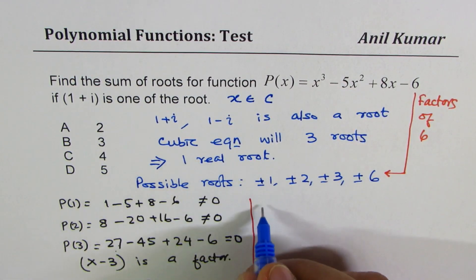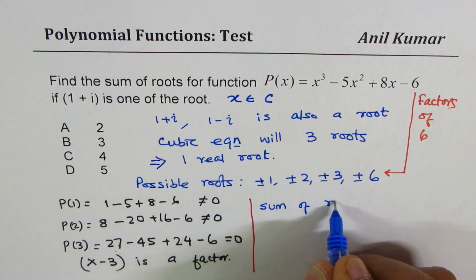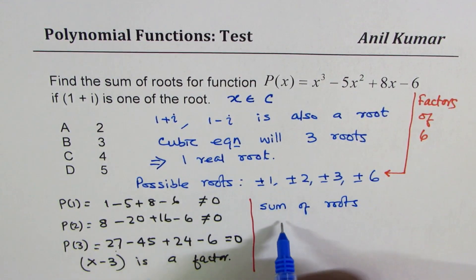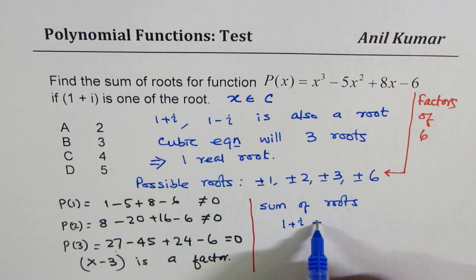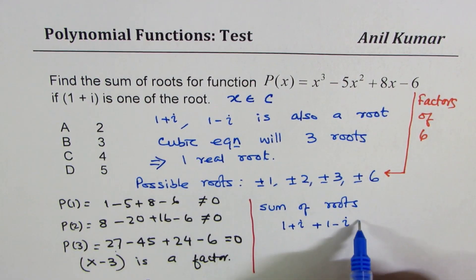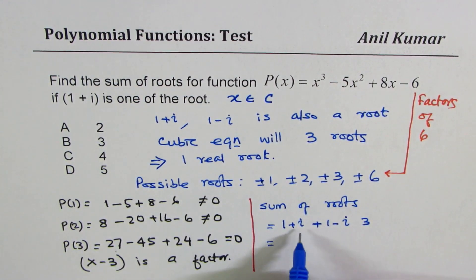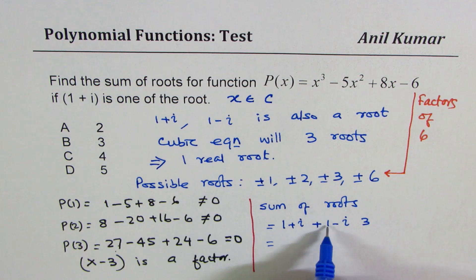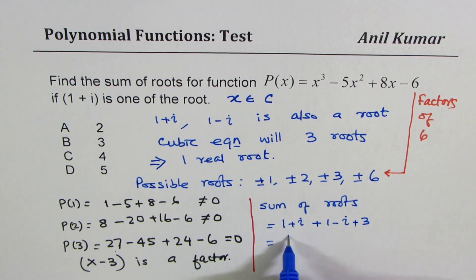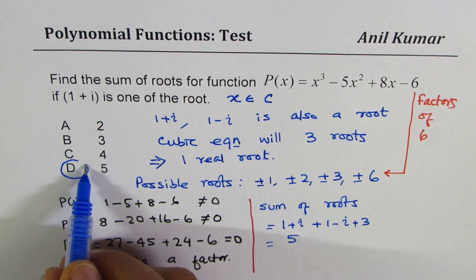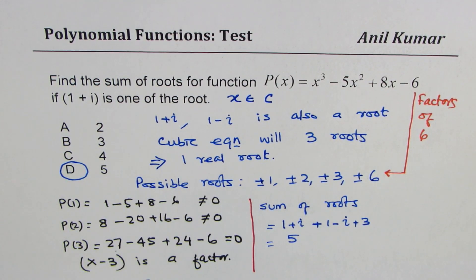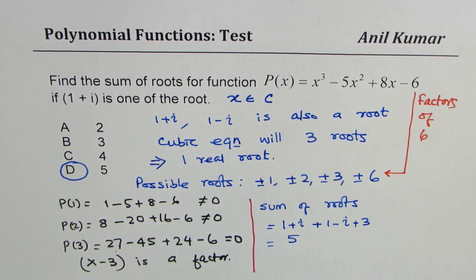Now let's find the sum of roots: (1 + i) + (1 - i) + 3. The +i and -i cancel, so we get 1 + 1 + 3 = 5. So the answer is (d), which is 5. These questions are very important and can be tricky at times, so I hope this solution helps you understand how to solve them in the test. Thanks for watching and all the best.